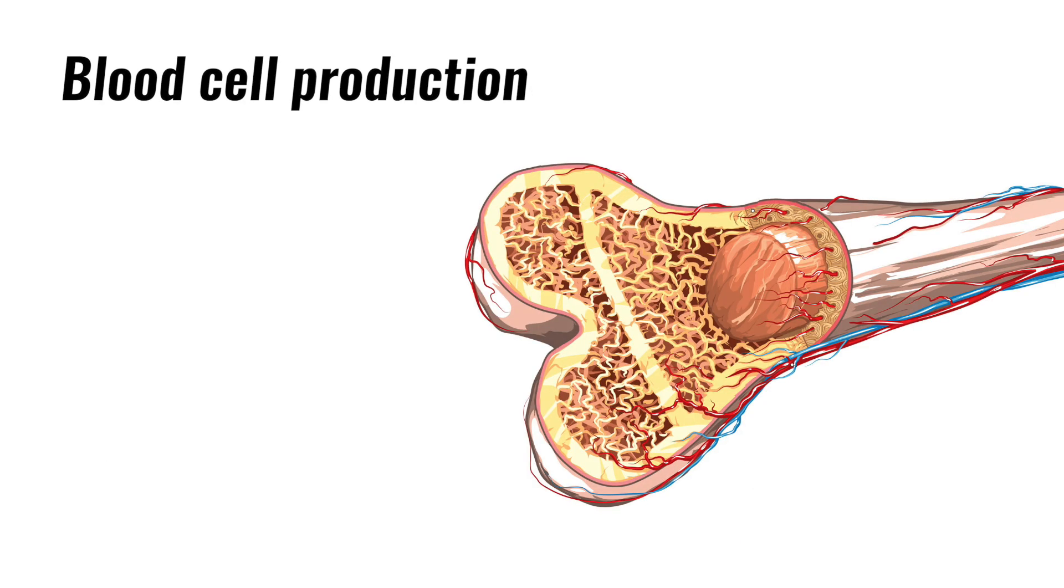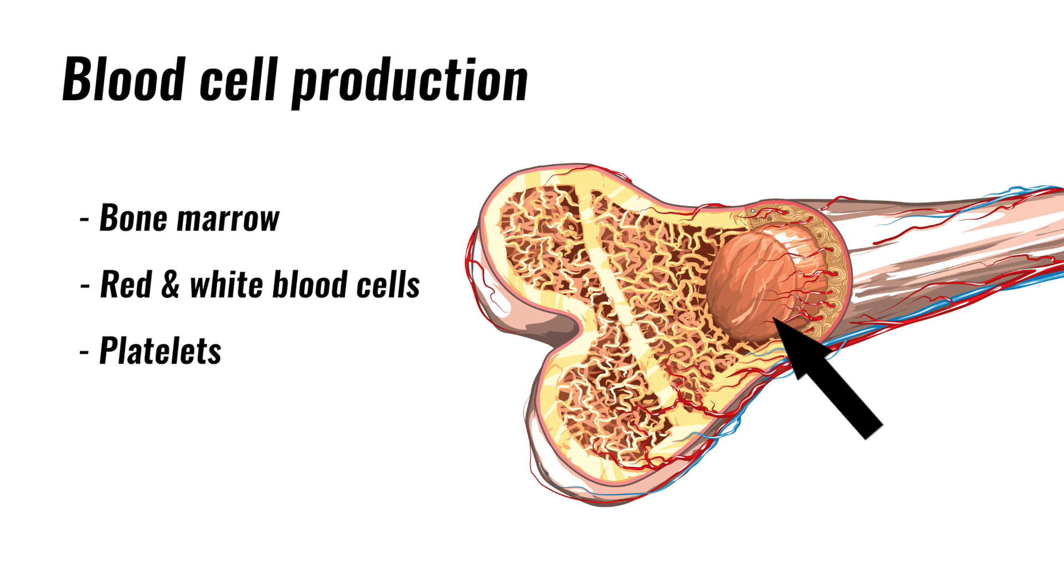The inner part of a long bone contains bone marrow. This is where red and white blood cells and platelets are produced. Red blood cells carry oxygen to your muscles. White blood cells are important for fighting disease and infection, whilst platelets cause blood clotting when the skin is damaged.